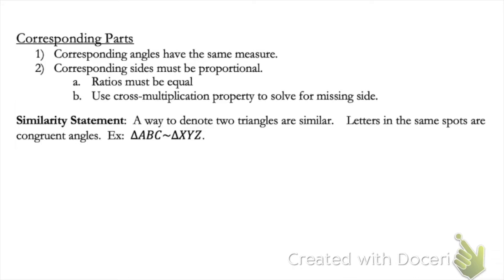A similarity statement is a way to denote two triangles are similar. Letters in the same spot are congruent angles. So here's an example. Triangle ABC is similar, that little squiggly, to triangle XYZ. So if I were to draw this, angle A and angle X would be equal, B and Y, and C and Z.